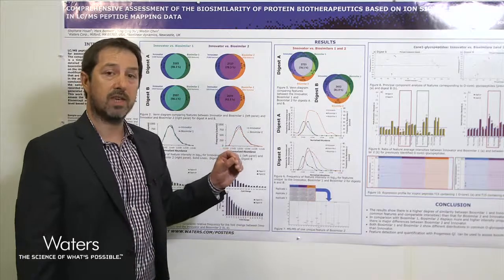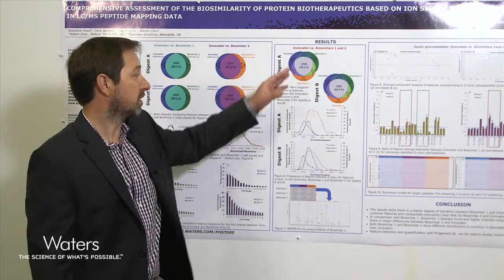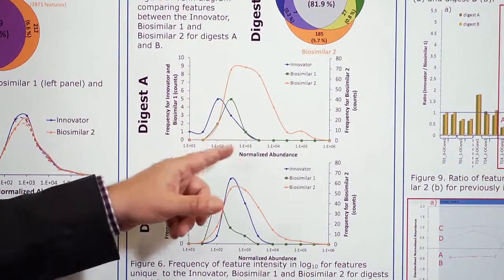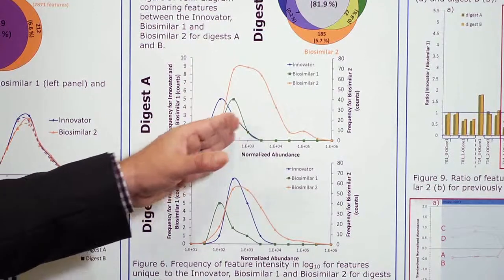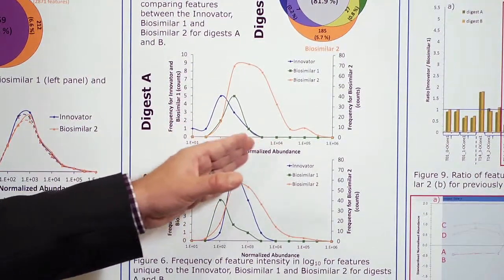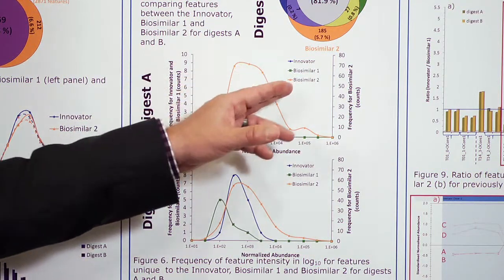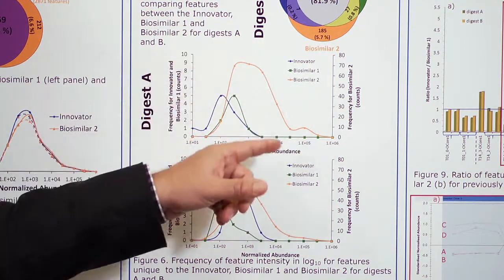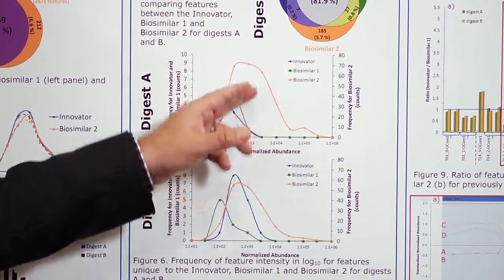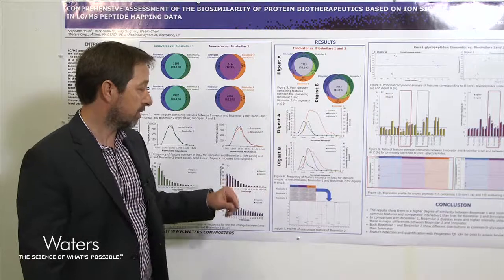If we look at the intensity distribution of those unique features for each sample, for the innovator and biosimilar one they are on the low side of normalized abundance — so those are low intensity features. On the other hand, for biosimilar two you have more unique features but also at higher intensities, and this is true for both digest A and digest B.